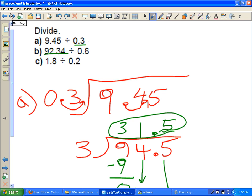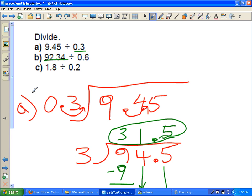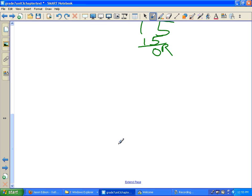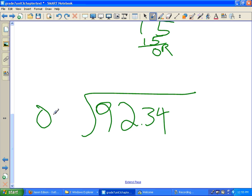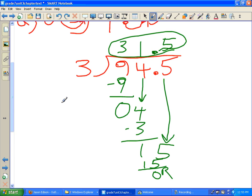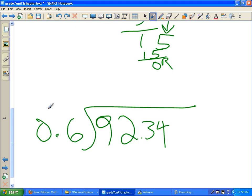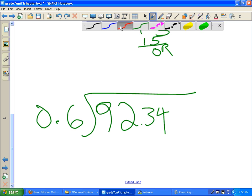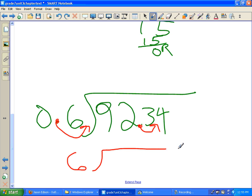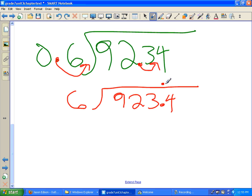92.34 divided by 0.6. So let's do that down here. 92.34, and we're going to divide it by 0.6. I'm not going to work through all this one. You can do that one. But, again, if we want to get rid of that lovely decimal here, we can shift it one place. But we must shift it right here one place. So we have 6 into 923.4. Now all you have to do, put your decimal right above the decimal so you don't forget.